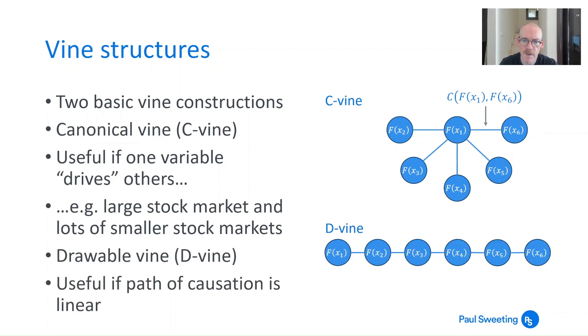The second fundamental vine structure is a drawable vine or a D-vine. And this is where you've got each node joined sequentially to the next node. So every node is connected to two other nodes apart from the ones at the start and the finish which are just connected to one. And this is useful if you've got some kind of linear causation between the different nodes or the different variables that you're looking at.